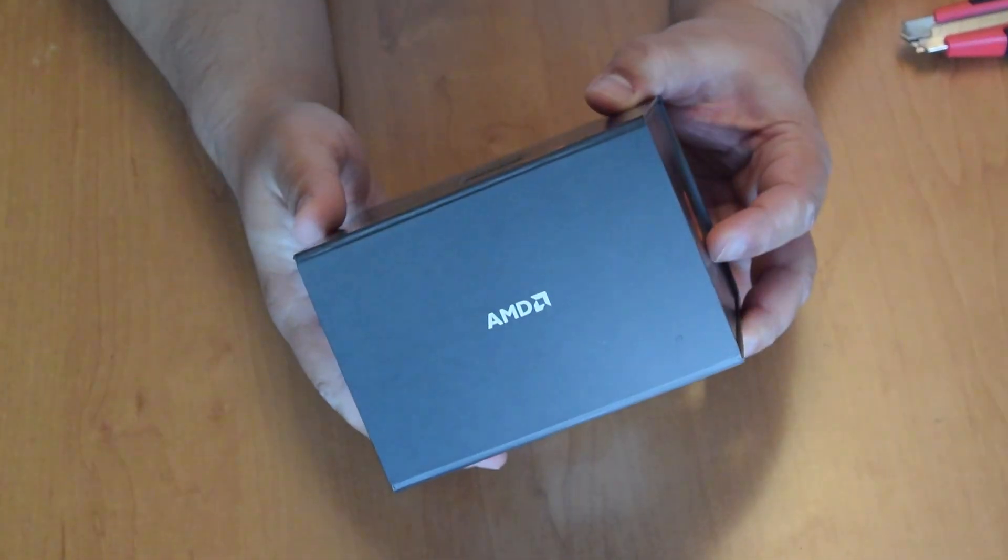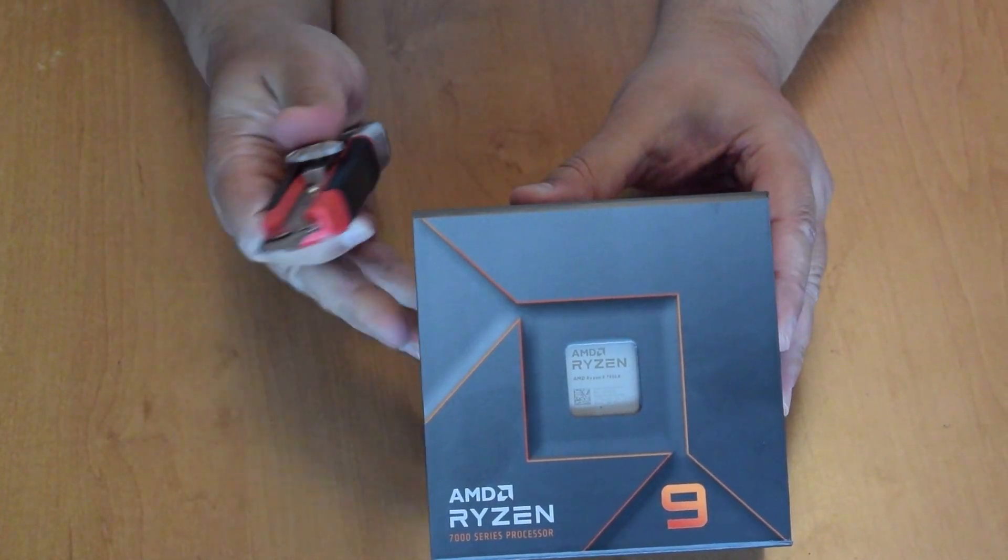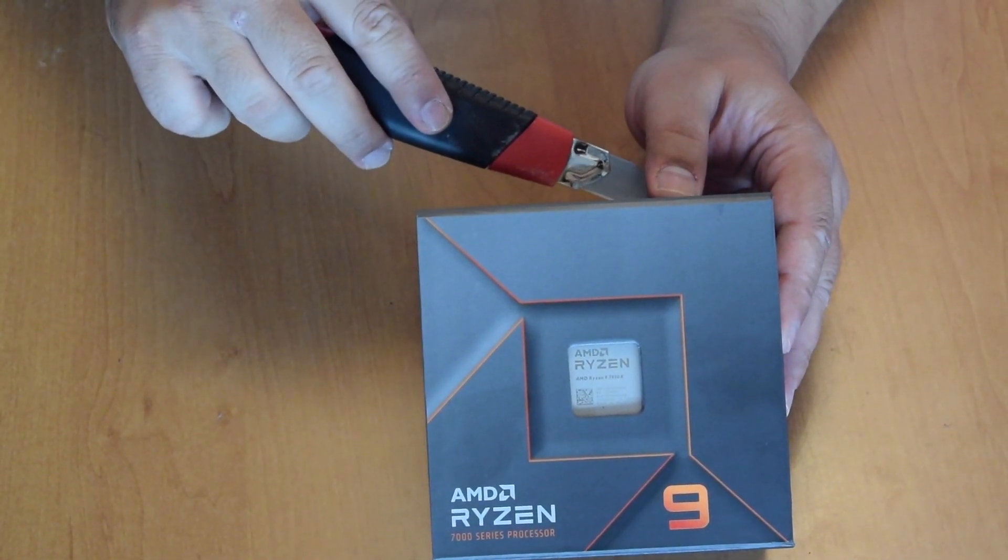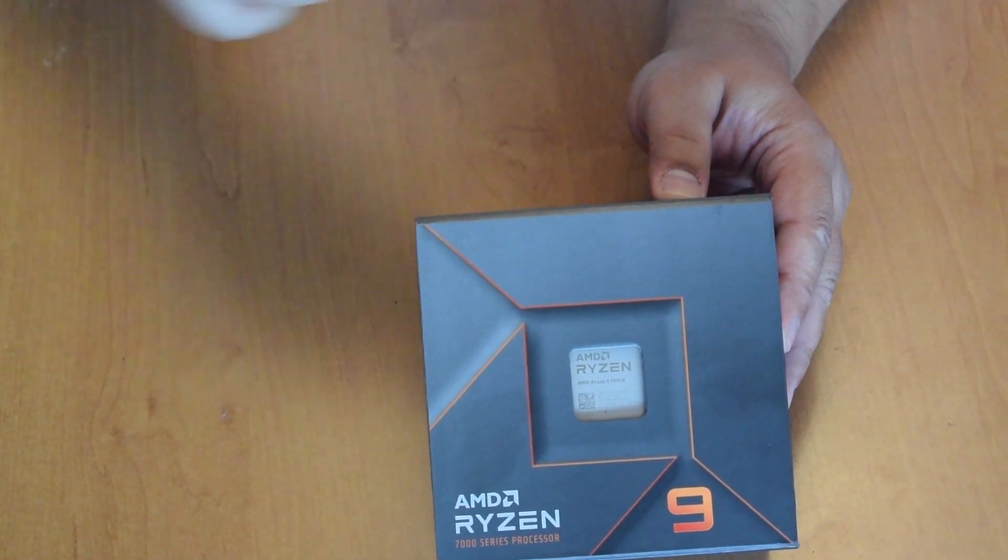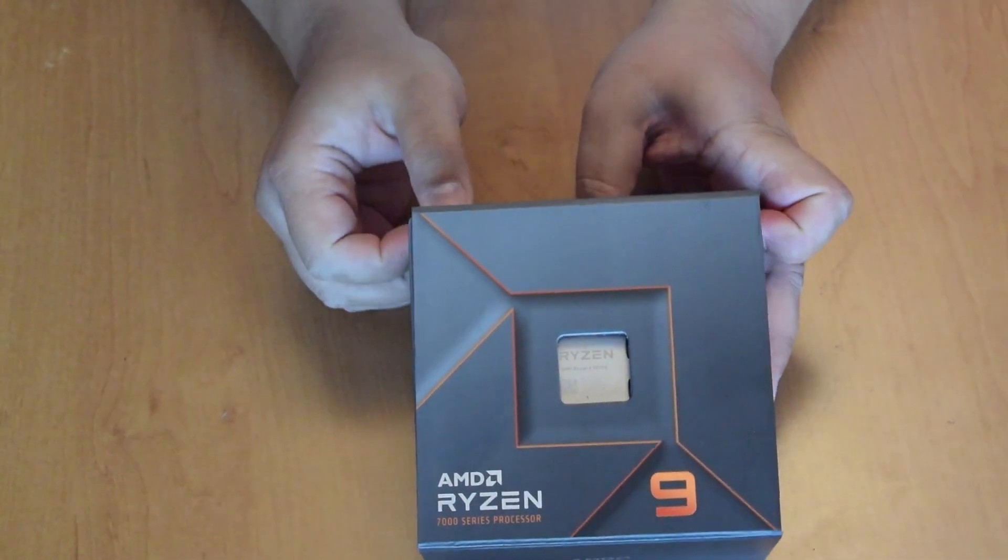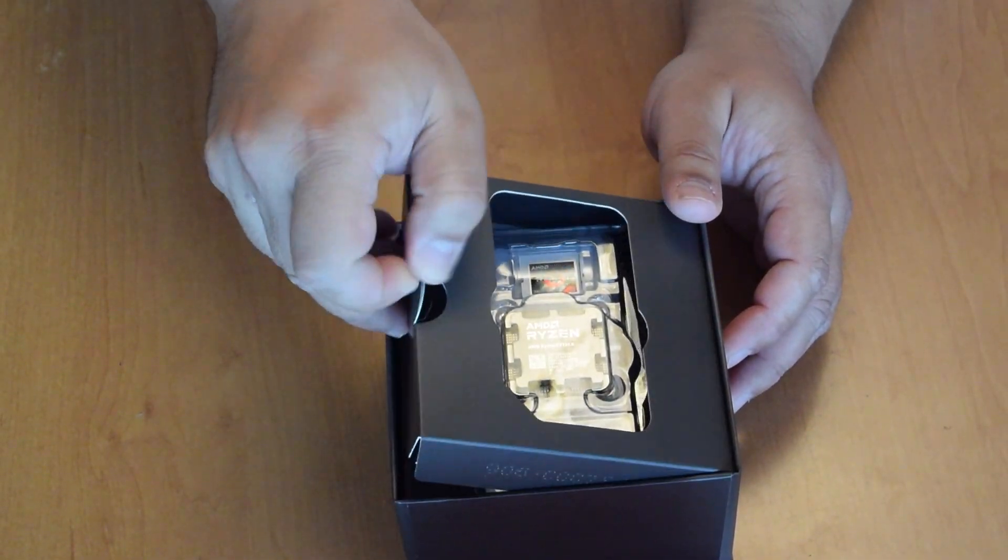Here is the box, it is the same as the other Ryzen 9. It flips this way and here is the CPU.